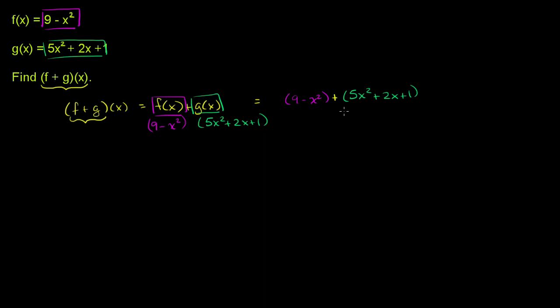Now we can simplify this. Let me get rid of the parentheses. This is equal to 9 minus x² plus, since this is positive we don't have to worry about the parentheses, so plus 5x² plus 2x plus 1.